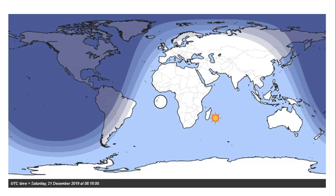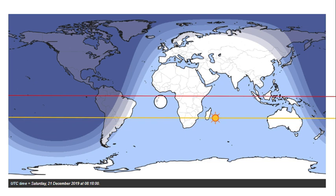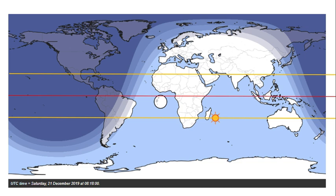Let's talk about the 21st of December — the December solstice. Here we have drawn in the equator, the Tropic of Capricorn, and the Tropic of Cancer. The Sun on this date is traveling along the Tropic of Capricorn. Here I've drawn in the Arctic Circle — on the 21st of December, the Sun won't rise if you're in the Arctic Circle. It's going to be dark.